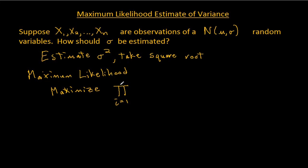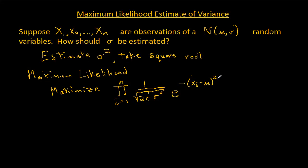Maximum likelihood says I should maximize the product of the PDFs evaluated at my observations. So I'm going to maximize the product from i equals 1 to n, and then the PDF of a normal distribution looks like 1 over the square root of 2π times sigma squared — I'm going to put sigma squared under the square root — times e to the power of negative xi minus mu squared, divided by 2 sigma squared.